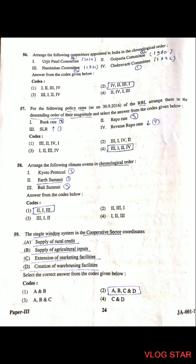Question 58: Arrange the following climate events in chronological order. The correct order is: first came the Earth Summit, then the Kyoto Protocol, then the Bali Summit.